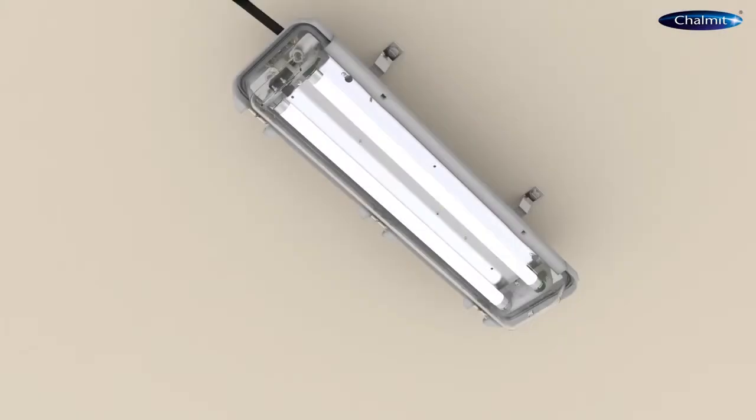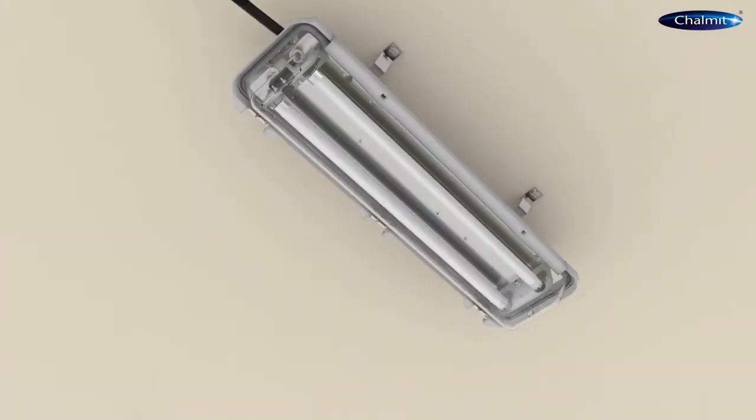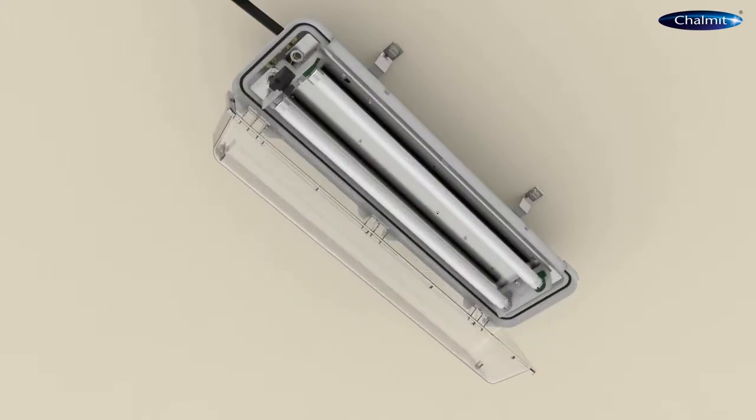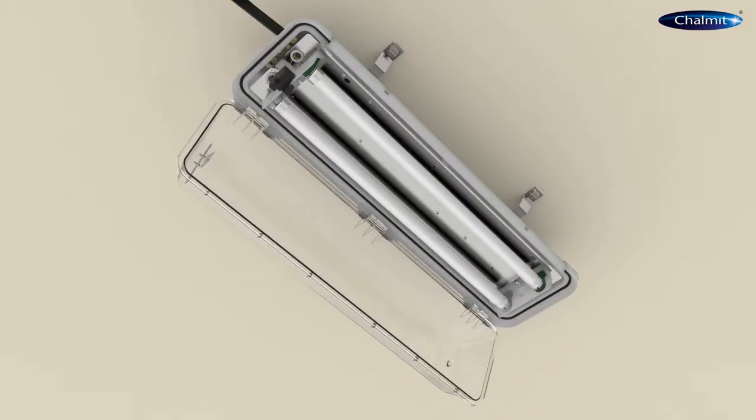To upgrade your existing Protector 3's to LED, isolate the power supply before accessing the fluorescent gear tray. Open the diffuser and remove the fluorescent lamps.